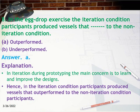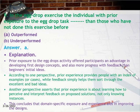Question 8: In the egg drop exercise, the iteration condition participants produced vessels that __ the non-iteration condition: a) outperformed, b) underperformed. Answer: A. Explanation: In iteration during prototyping, the main concern is to learn and improve the designs. Hence, in the iteration condition, participants produced vessels that outperformed those of the non-iteration condition participants.